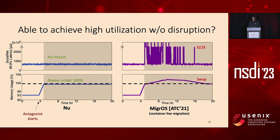Now let's look at microOS. Since it has to slowly migrate the entire monolithic container, it quickly runs out of memory and starts to swap. As swap is catastrophic to application performance — especially tail latency — we observed a 322x tail latency increase, which seriously violates the application's service-level agreement.